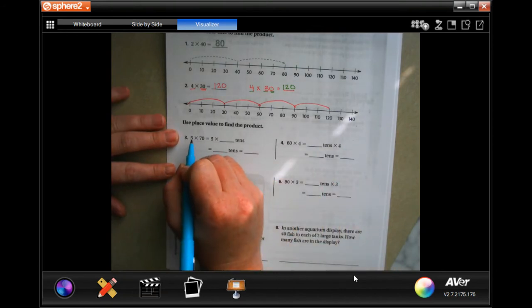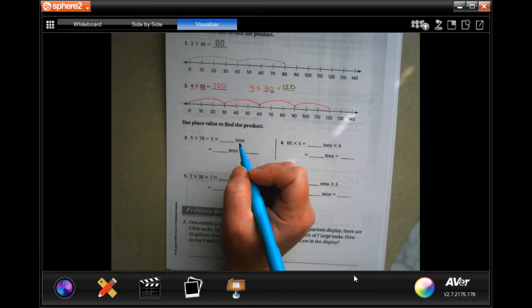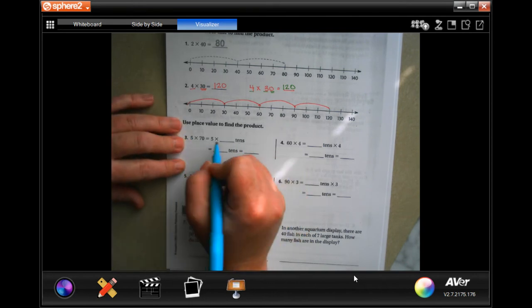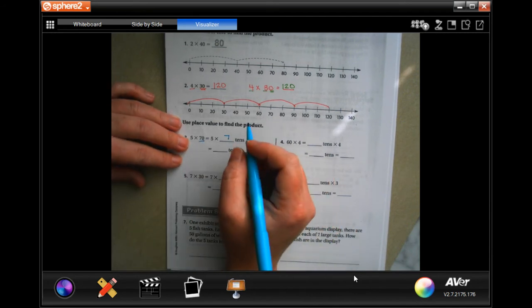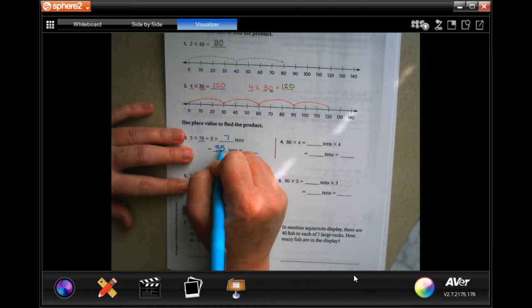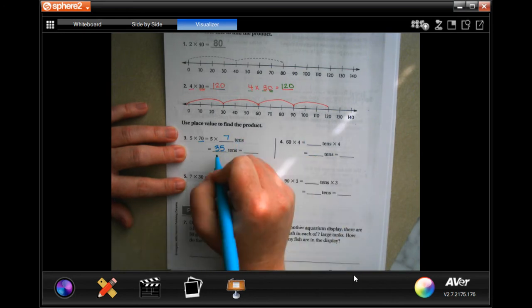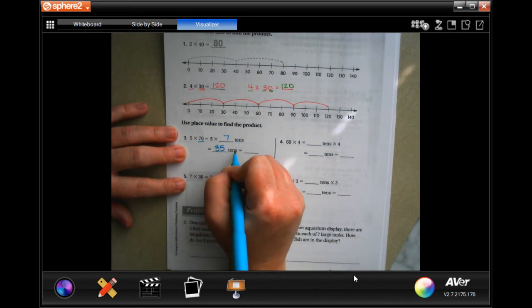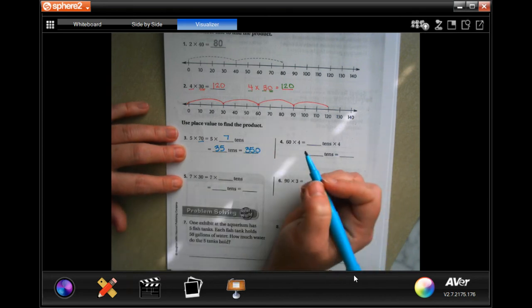So 5 times 70, well, that would be 7 tenths. 70 is 7 tenths. So that would be 35 tenths because 5 times 7 is 35. And so when you're multiplying 35 by 10, you're going to stick 0 on the end. So you're going to get 350.